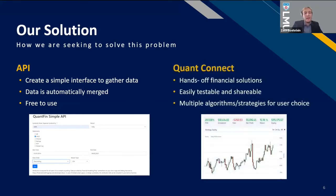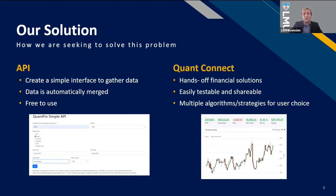QuantConnect is really about that whole hands-off financial solution. We wanted to give people a method to be able to trade without a lot of financial knowledge or the time to check the market constantly. The benefits of QuantConnect are that it's easily testable and every algorithm is shareable. You can easily see results from a high level by looking at the graph, but also get into individual orders and trades, as well as statistics it automatically generates. We built three algorithms currently and plan to build more, allowing people to choose which trading strategy fits their general financial goals, whether high risk or low risk.